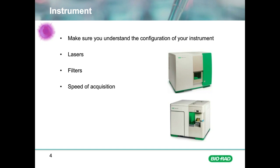Cytometers such as the ZE5 have five spatially separated lasers and 27 fluorescent detectors, allowing greater flexibility than instruments with fewer lasers and detectors. Using a cytometer that has collinear lasers, such as the S3E, whilst fantastic for sorting cells, may not be compatible with some fluorophore combinations. The speed of acquisition may also influence your instrument choice, as rare cell populations may require you to collect many cells. Using an instrument with high speed, such as the ZE5, will greatly reduce acquisition time.